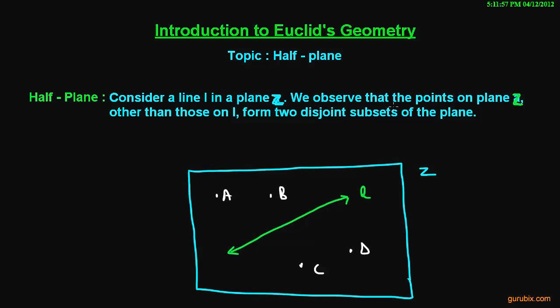We observe that the points on plane Z other than those on line L form two disjoint subsets of the plane. So, these points A, B, C, D form two half planes.